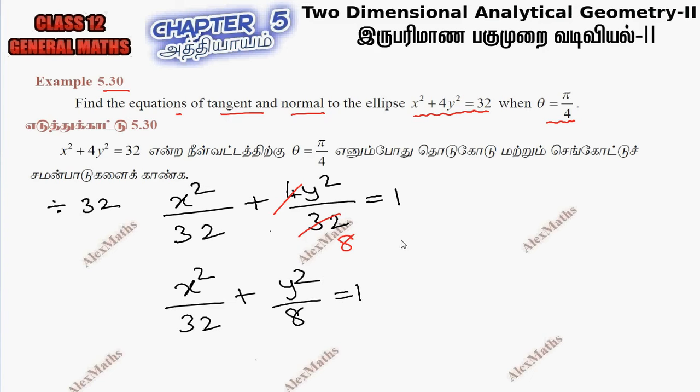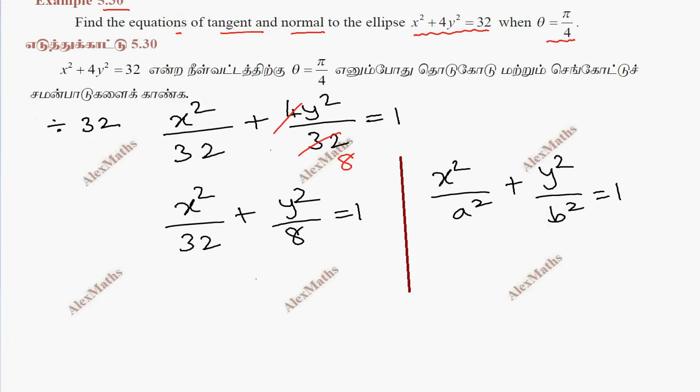This is the ellipse general equation: x²/a² + y²/b² = 1. So a² = 32 and b² = 8.